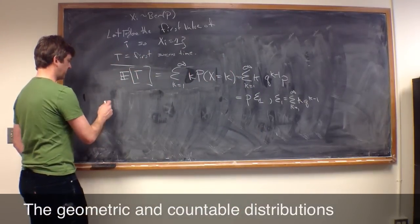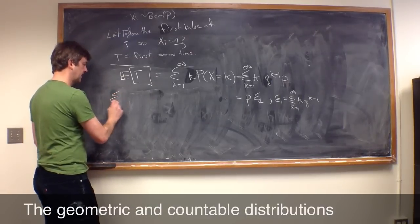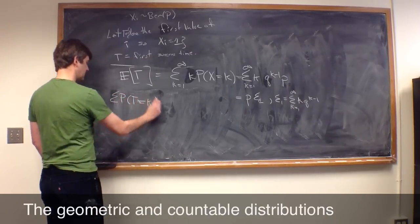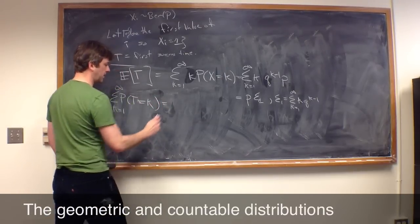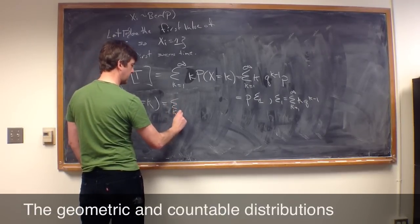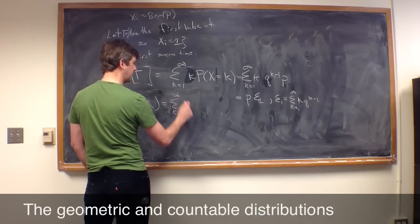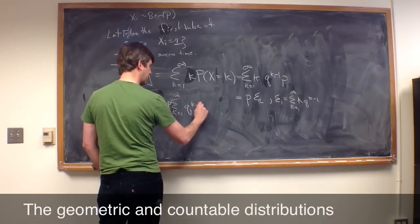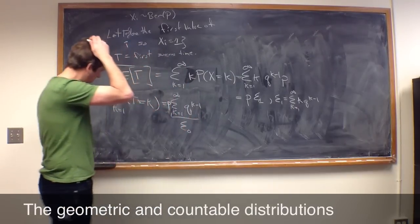All right. So, you might have already asked yourself, how do I know that this is a well-defined probability distribution? So, one thing you'd want to check is the sum that probability T equals K, K equals 1 to infinity should be equal to 1. Well, let's double check that that's true.